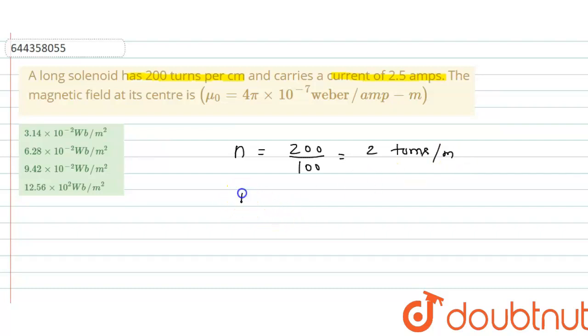Now, current in the loop is i = 2.5 ampere and μ₀ is given. The formula for magnetic field inside solenoid is B = μ₀ni.